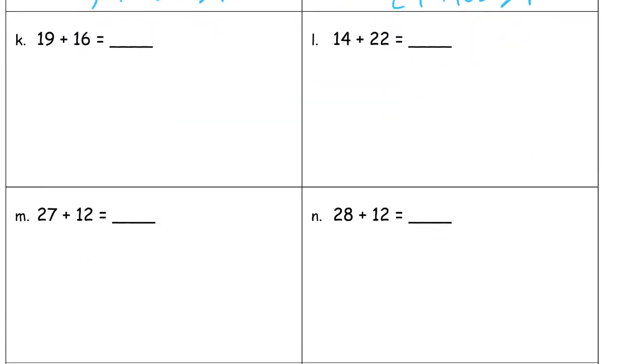19 plus 16. This is one where that 19, you might be making the next 10 to add because 19 is really close to 20. So let's make this 1 and 15. It's 19 plus 1 first to get 20, and then add the 15. 20 plus 15 is 35.